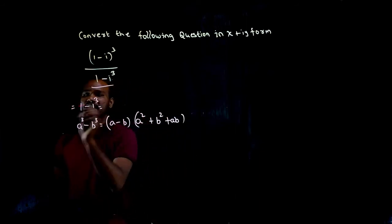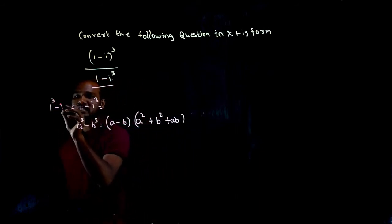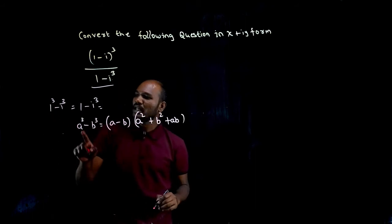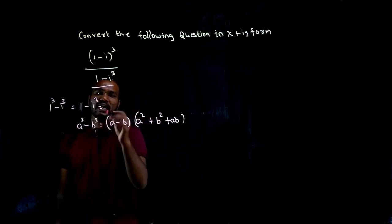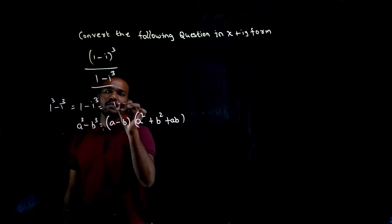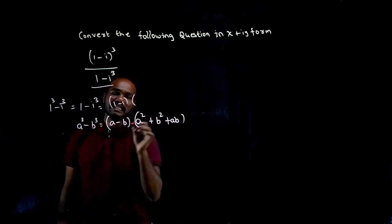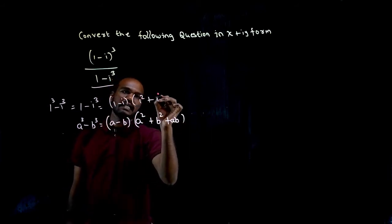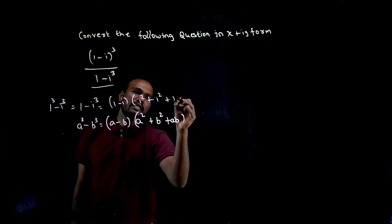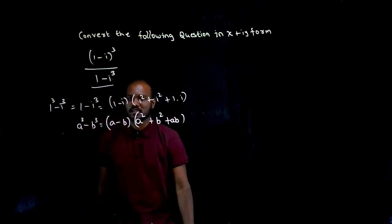So (1-i)³ can also be written as 1³ minus i³. So a value is 1, b value is i. If I apply the formula, a minus b is (1-i) times, what is a²? That is 1². What is b²? That is i², plus 1 times i.